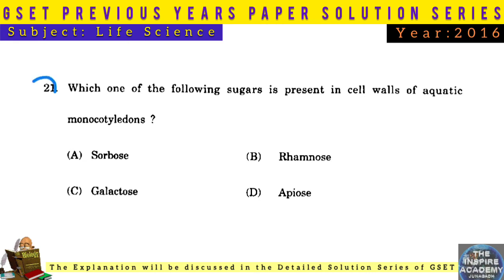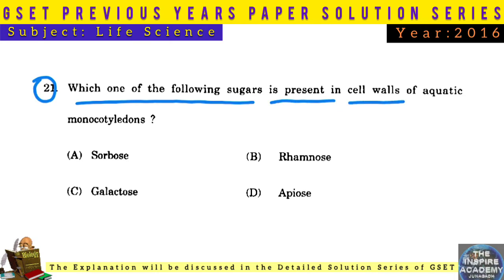Question No. 21: Which one of the following sugars is present in cell walls of aquatic monocotyledons? Answer: Apiose.